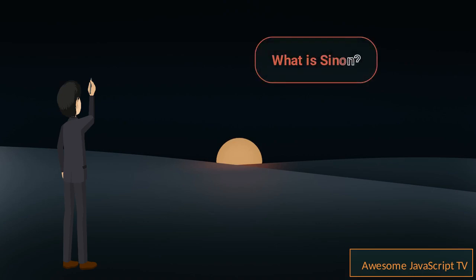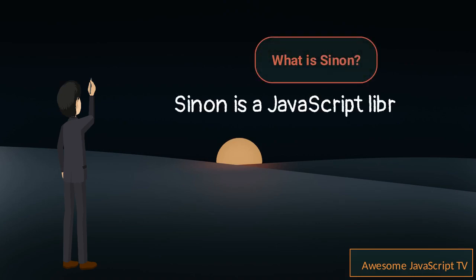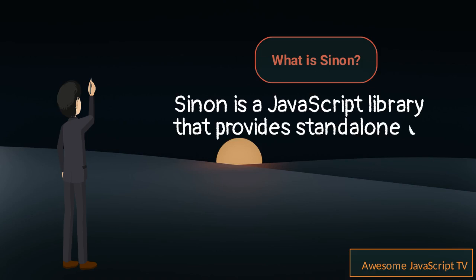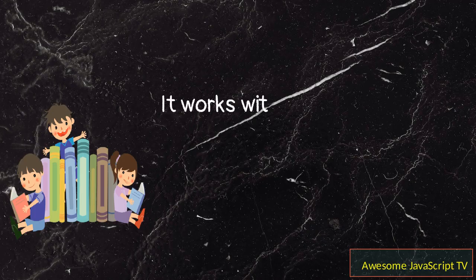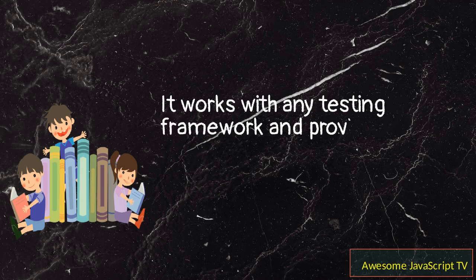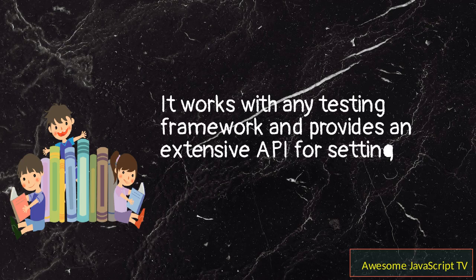Sinon is a JavaScript library that provides standalone test spies, stubs and mocks with no dependencies. It works with any testing framework and provides an extensive API for setting up and verifying behavior.